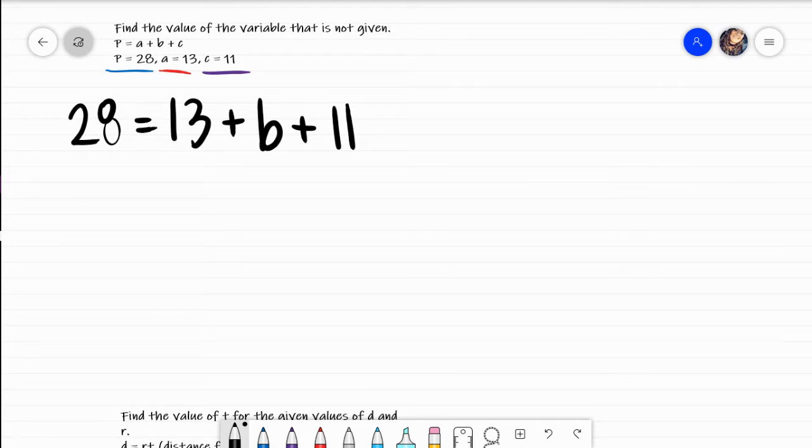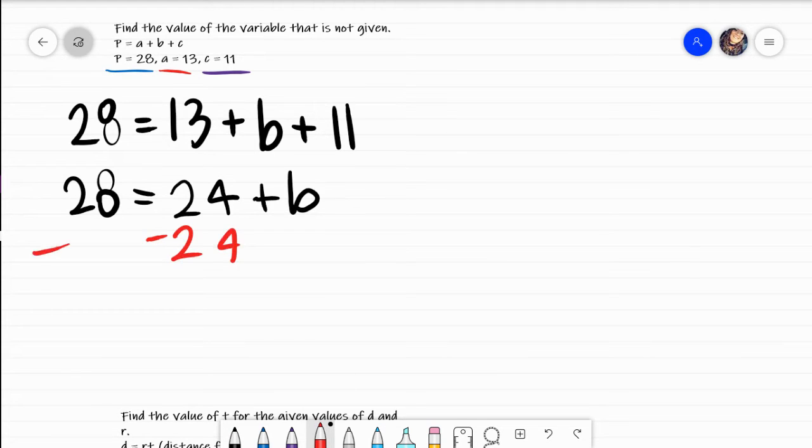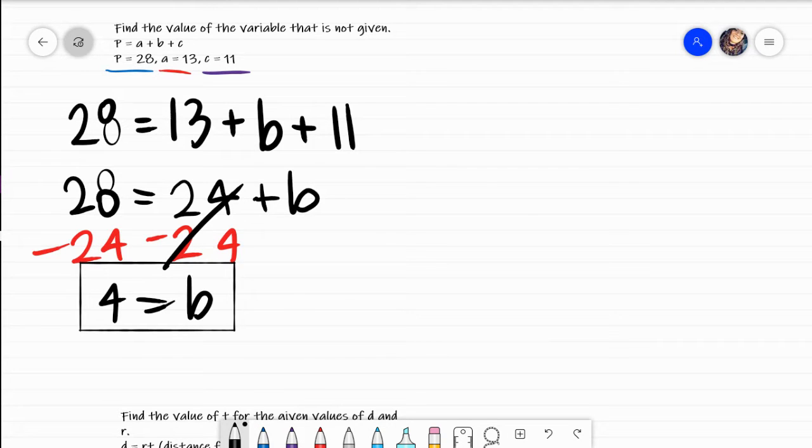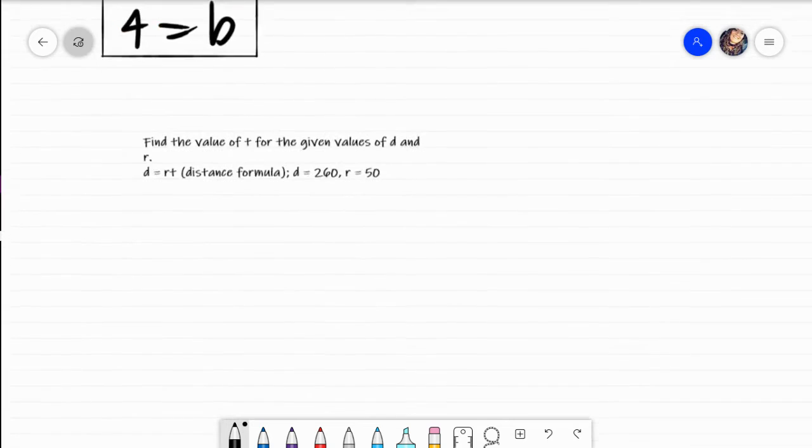If I add or combine the like terms on the right-hand side, what I get is 13 plus 11 would be 24 and then I have my plus B. I need to solve for that variable. The inverse of a positive 24 would be a negative 24. What you do to one side, you have to do to the other. If I do that subtraction, I get 4 equals B. So my answer would be 4 equals B, or B equals 4.